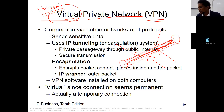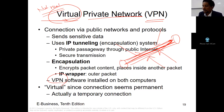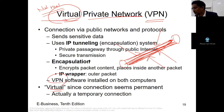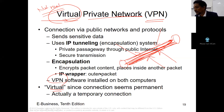Encapsulation encrypts packet content and places it inside another packet — this is called IP wrapping — then sends these packets to the receiver. The VPN has to be installed on both the sending and receiving computers. The connection seems permanent but is actually temporary. It's a temporary tunnel through which you and your receiving computer communicate. VPN is more secure, but you have to pay more for this service.